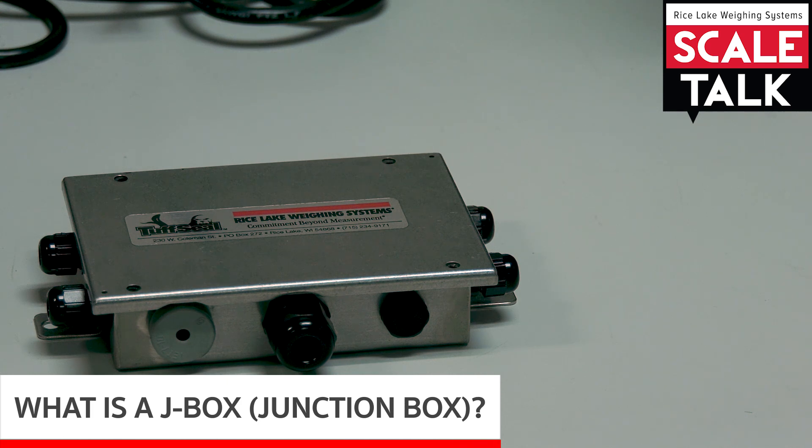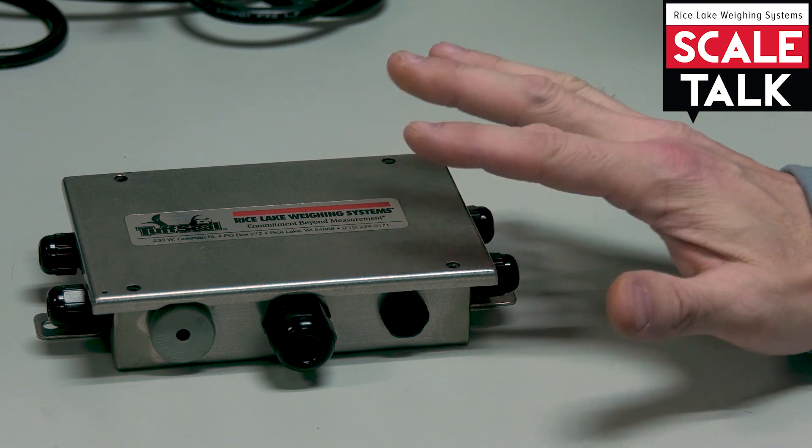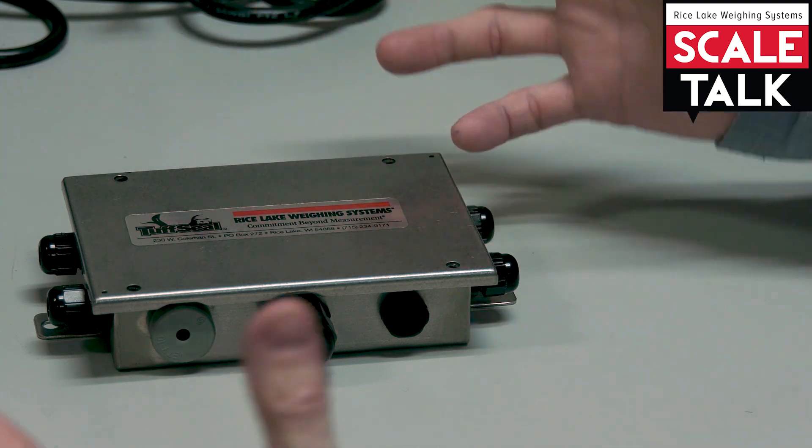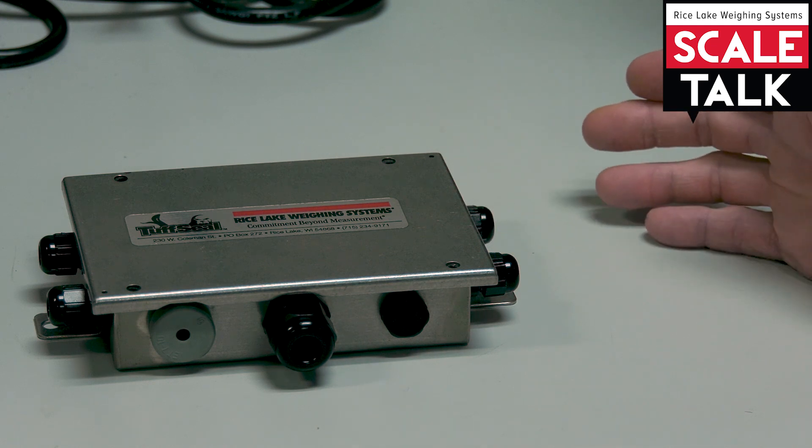In essence, a J-Box, and the J stands for junction, in some parts of the country or parts of the world you might hear this also referred to as a summing box. In a nutshell, the idea behind the J-Box is to bring multiple load cells together so that they can function as a single scale.